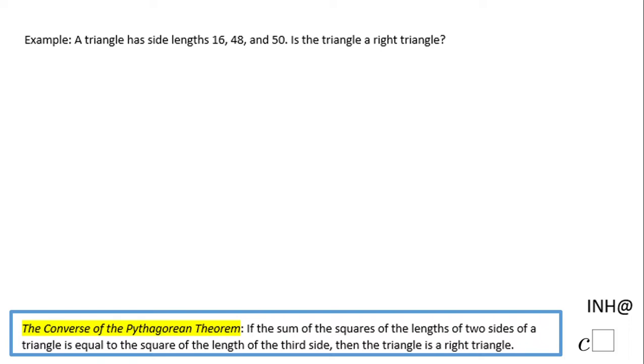Welcome back to I Need Help at C Square. In this example, we have a triangle that has side lengths 16, 48, and 50, and we want to see if this triangle is a right triangle.